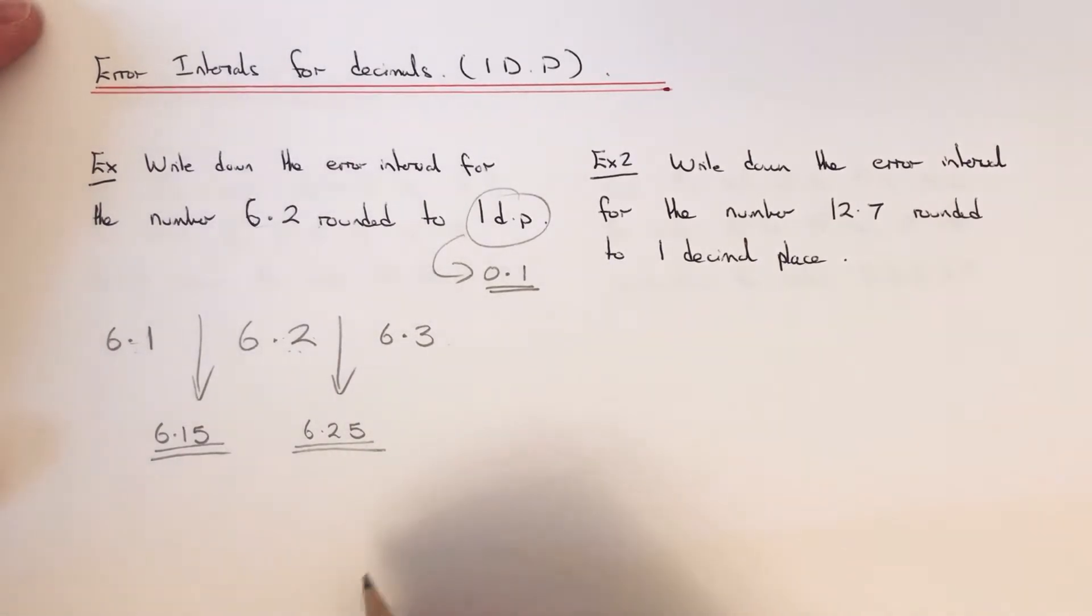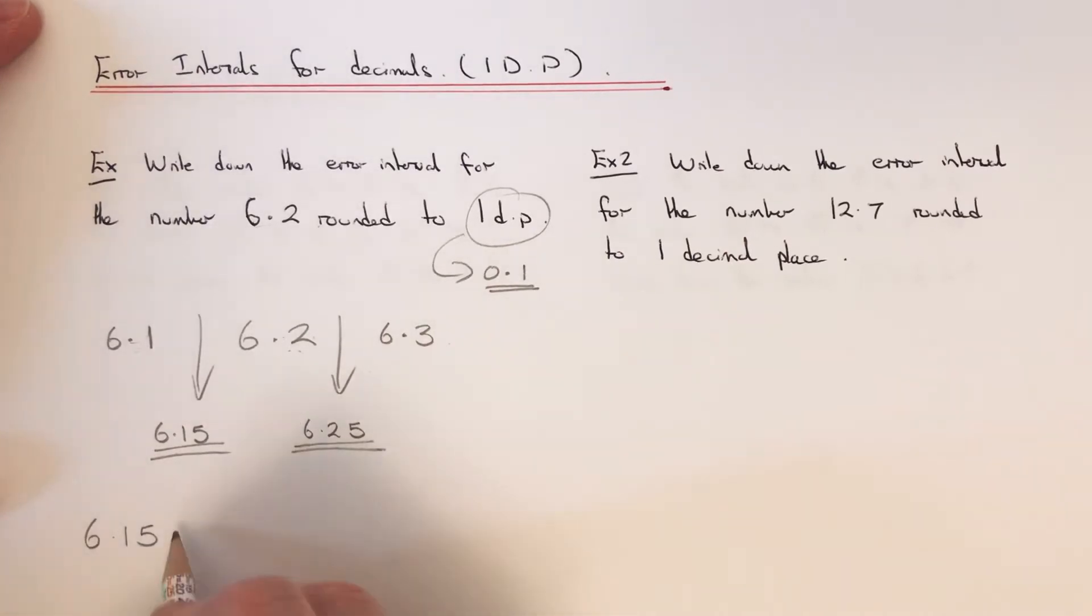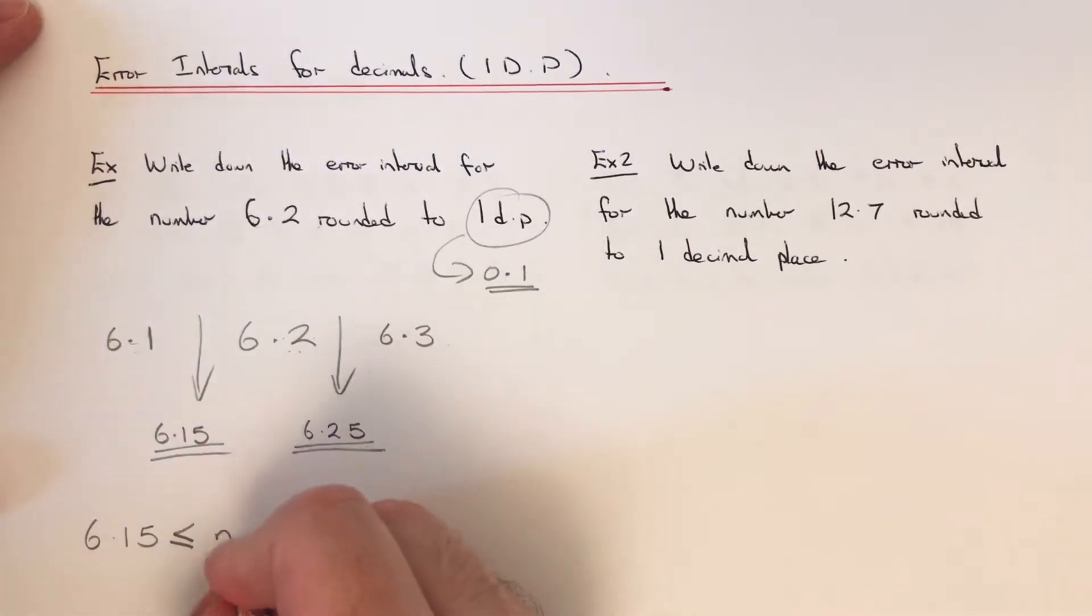So we write our lower bound 6.15, then you put a less than or equal to sign, then you need to put a letter in the middle. So the letter I'm going to put in the middle is the letter n because it was just a number.